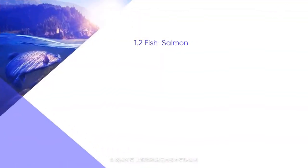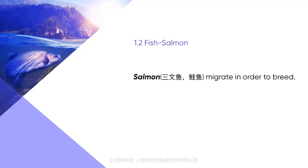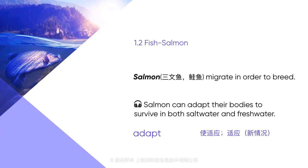The migration habits of salmon also continue the cycle of nature. While their experience is different from the Arctic tern, it is no less interesting. Salmon migrate in order to breed. Salmon spend most of their lives in the ocean, which is saltwater, yet when it's time to breed, they do so in freshwater rivers. Salmon can adapt their bodies to survive in both saltwater and freshwater.